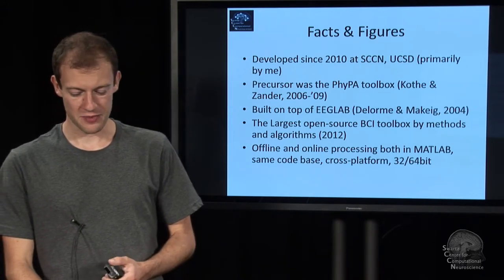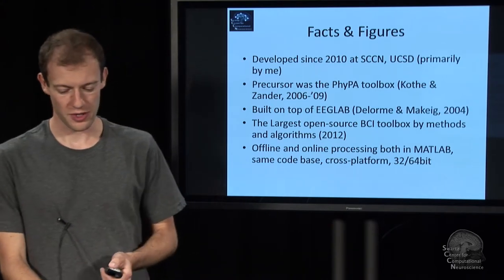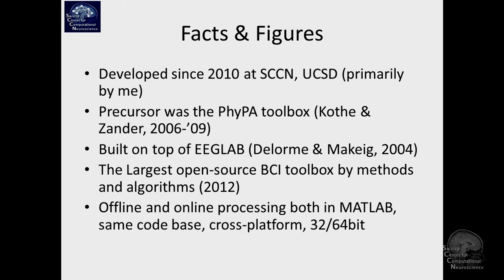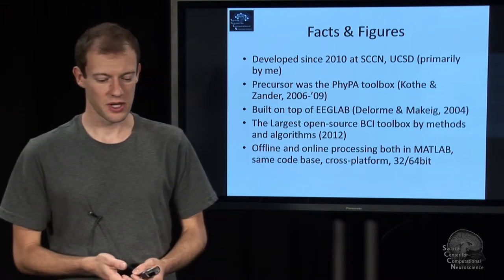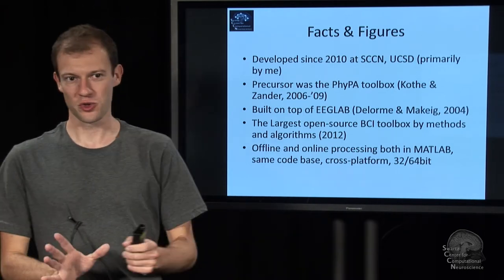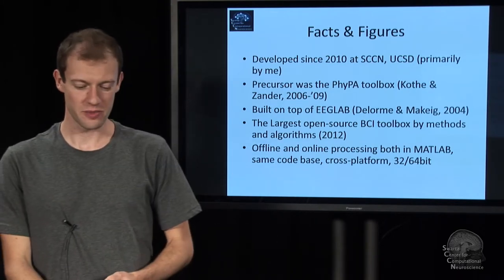The toolbox was started in 2010, primarily developed by the speaker with help from others. It is a successor to the Freepa toolbox, which was started in 2006 in Berlin with Torsten Zander. BCI Lab was basically a complete rewrite of that and goes much further — architected on top of EEG Lab, reusing a lot of that infrastructure. By 2012 it had become the largest open source BCI toolbox when counting the methods and algorithms implemented, with over 100 algorithms included.